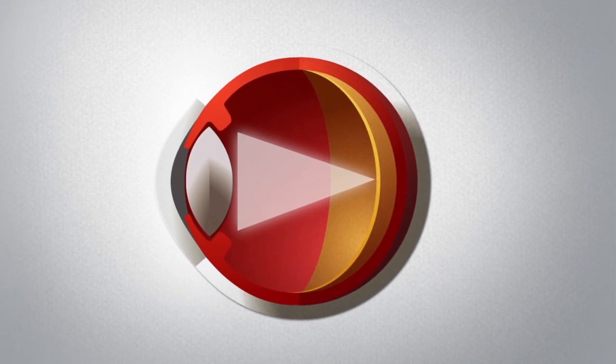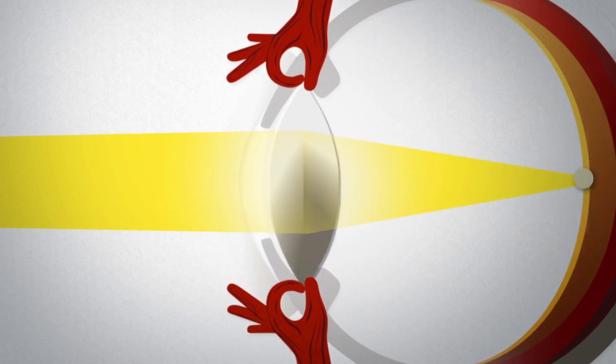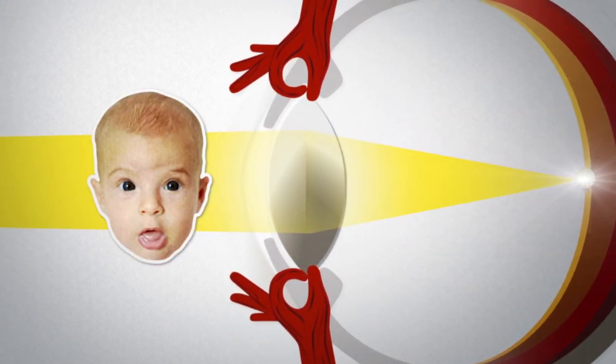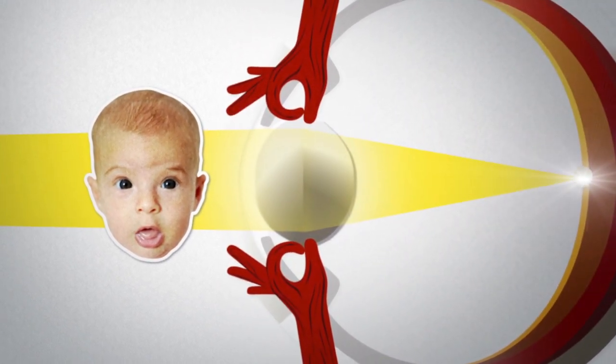Now let's take another look at the lens. When you focus your eye, tiny muscles actually pull on the lens, changing its shape. When you're young, the lens is flexible, so it's easy for those muscles to focus the lens on whatever you want.